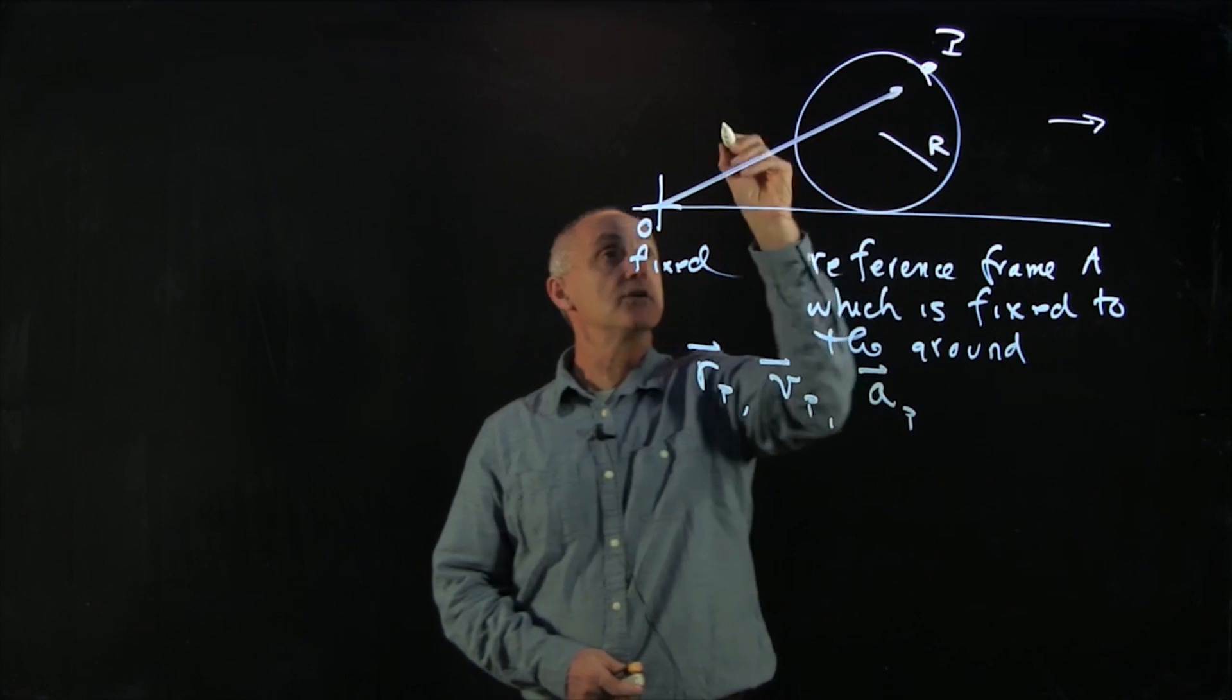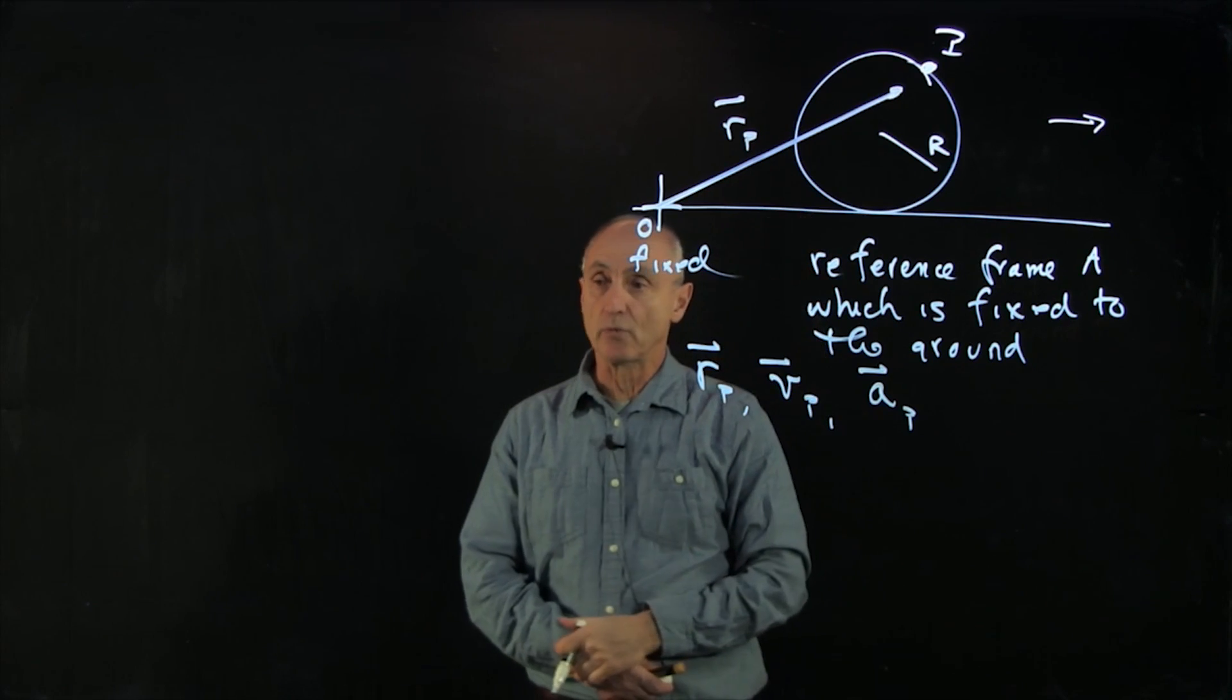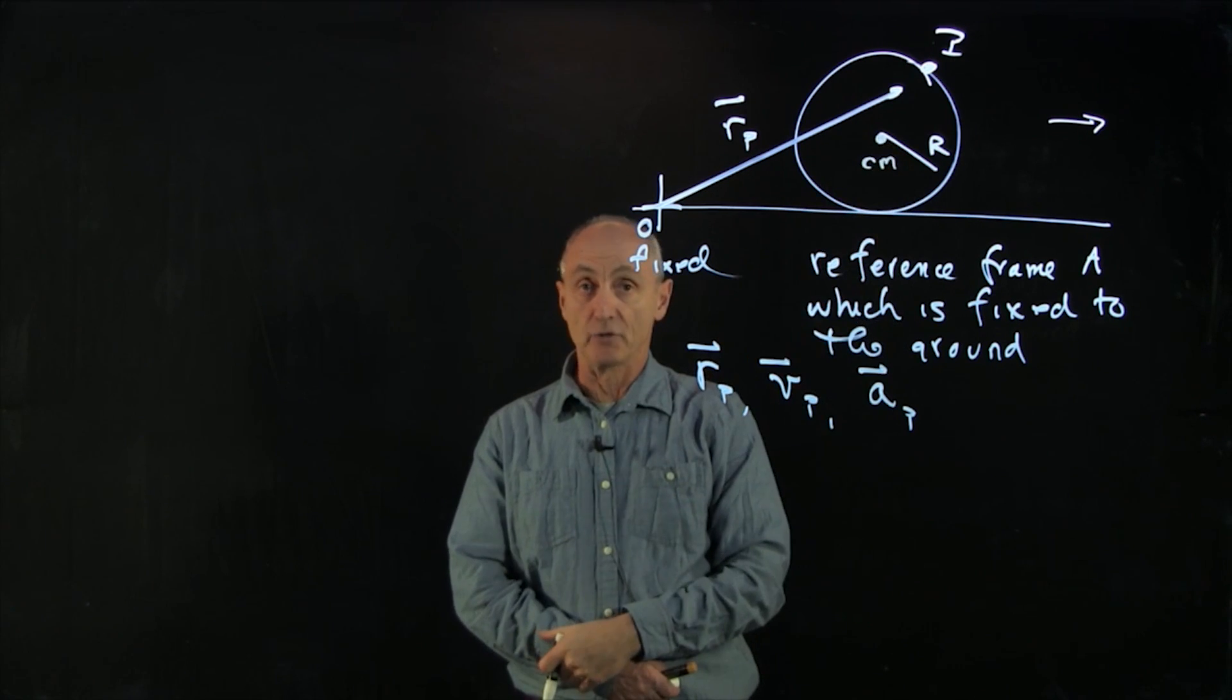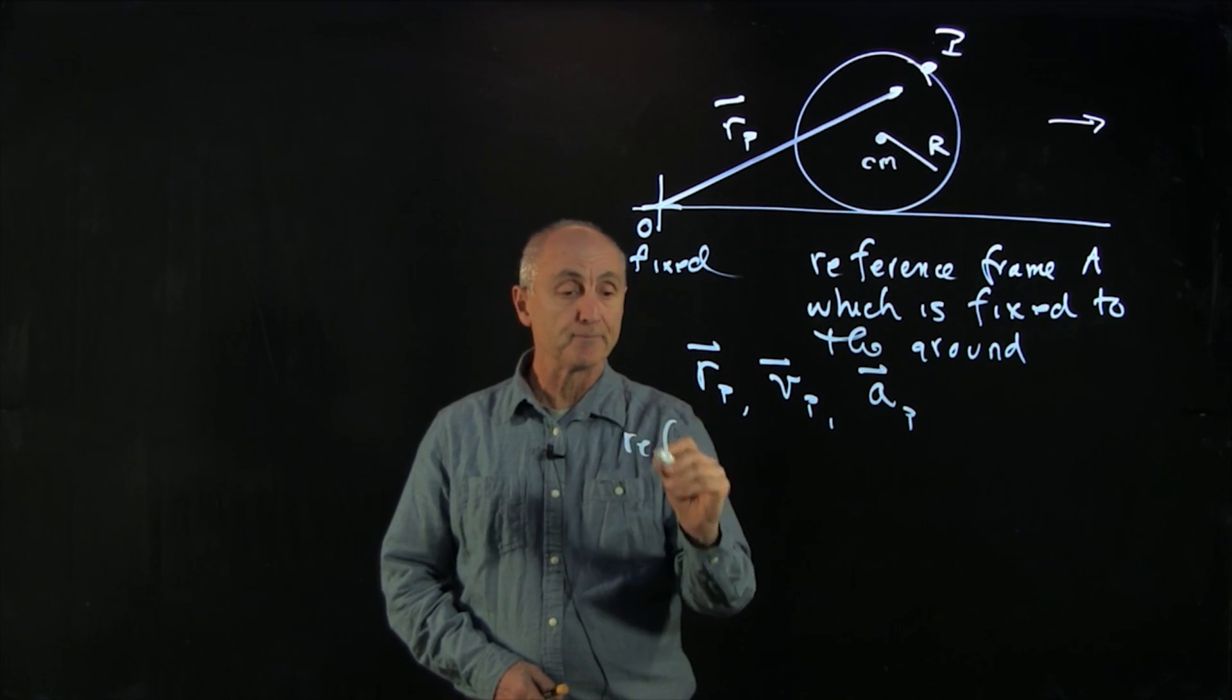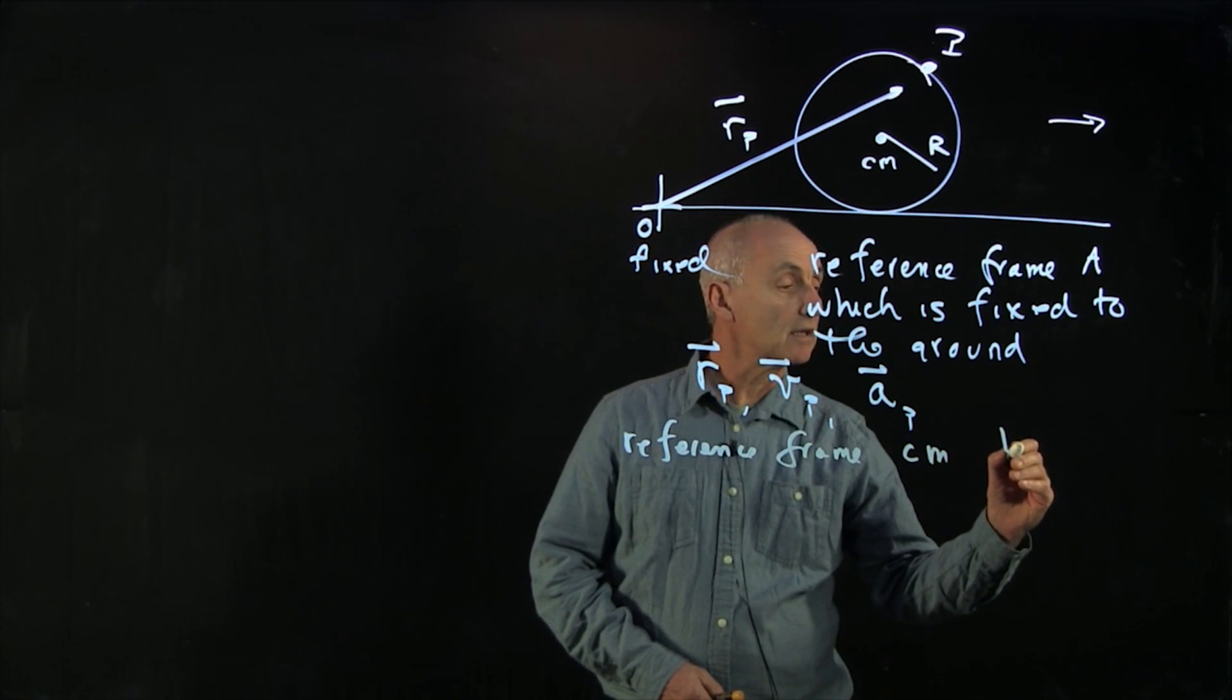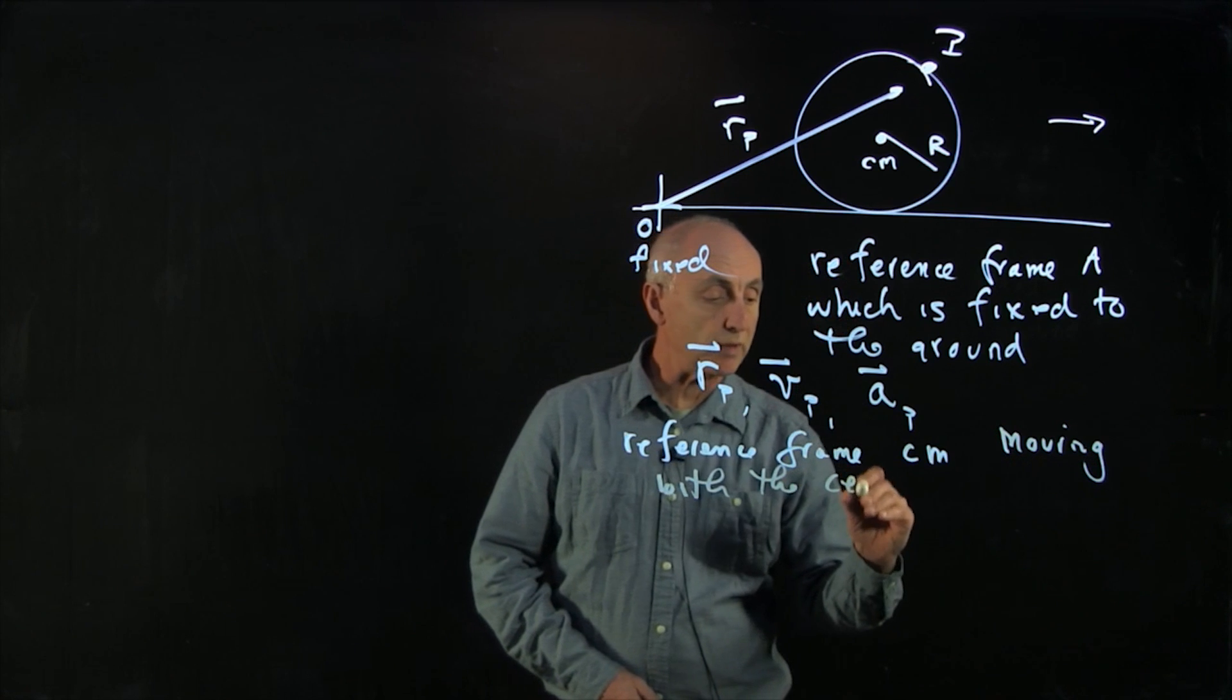Now, the position vector is given from my fixed origin to where the point on the rim is. Now, this can be quite complicated, but what we're going to do is consider a second reference frame that is located at the center of mass of the wheel. So our second frame, we'll call this frame Cm, is moving with the center of mass of the wheel.